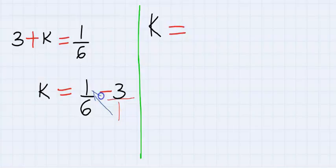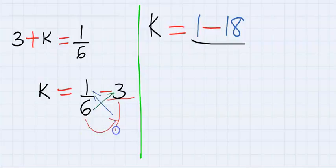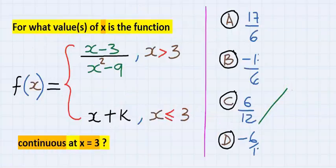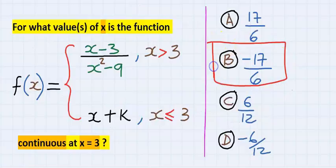Next, k is now equal to—we need to find the common denominator. First, 1 times 1 equals 1. We put a minus. 6 multiply by 3 equals 18. Next, we put a division. 6 multiply by 1 equals 6, and our answer is minus 17 over 6.